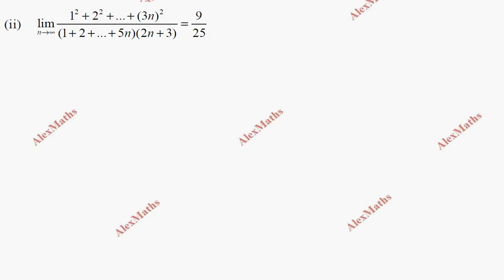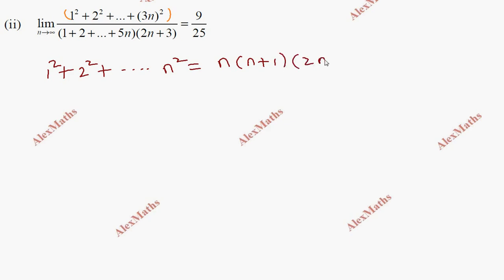Hi students, this is Alex here. In the problem of limit n tends to infinity, the numerator is a square series. The square series formula is: 1² + 2² + ... + n² = n(n+1)(2n+1) / 6.